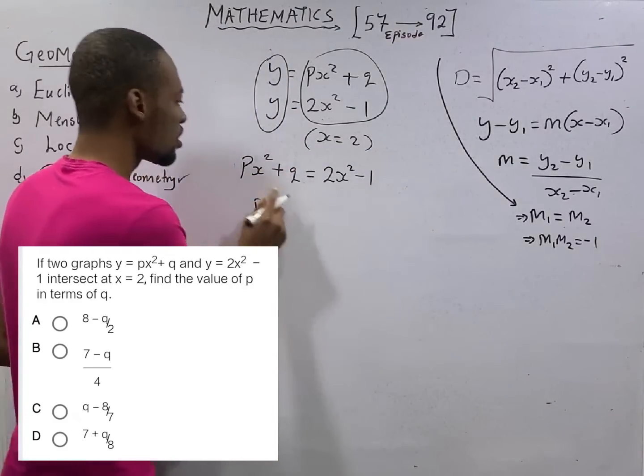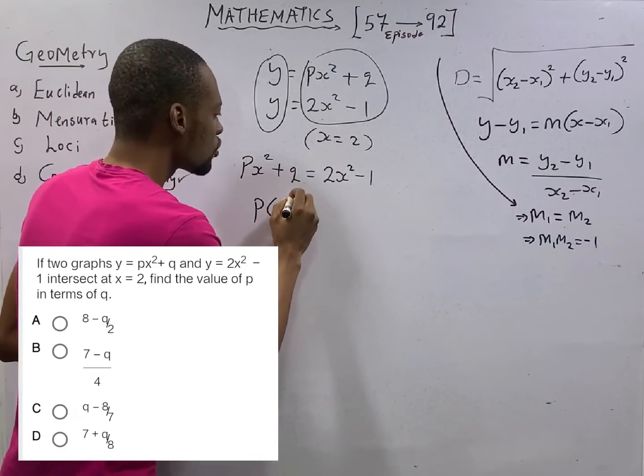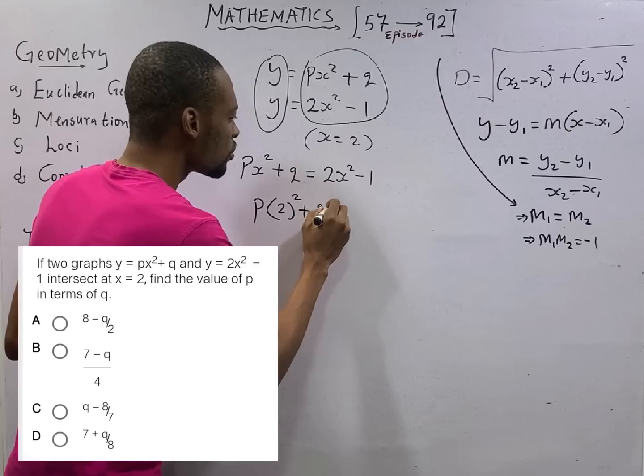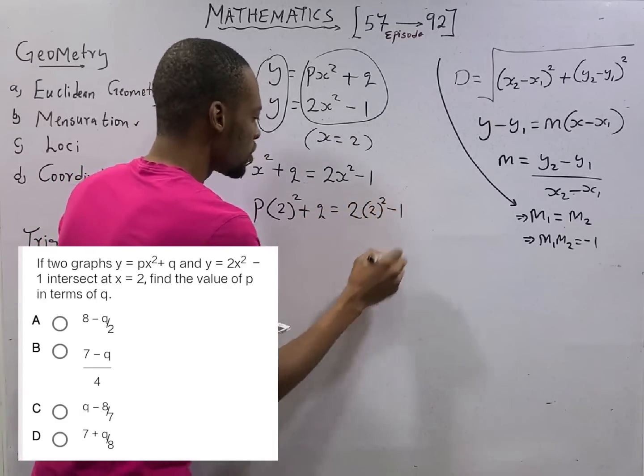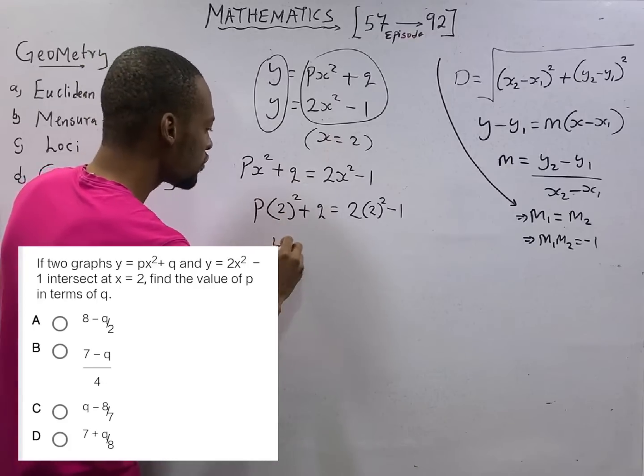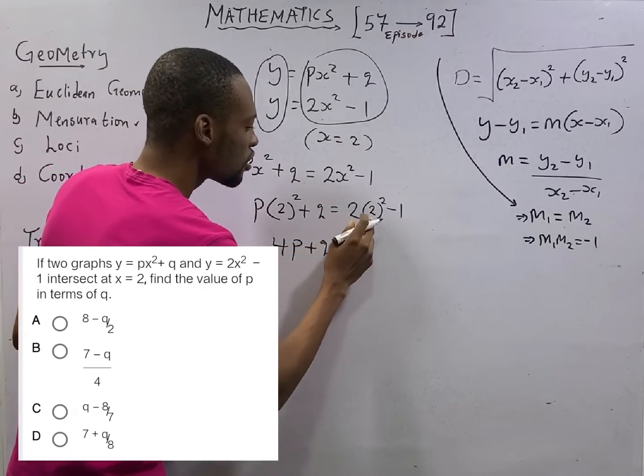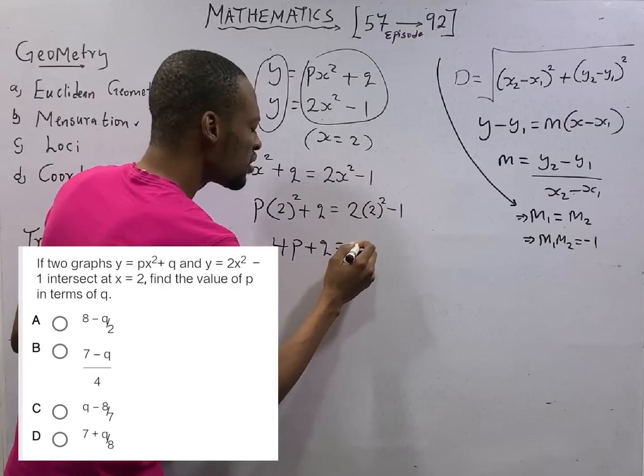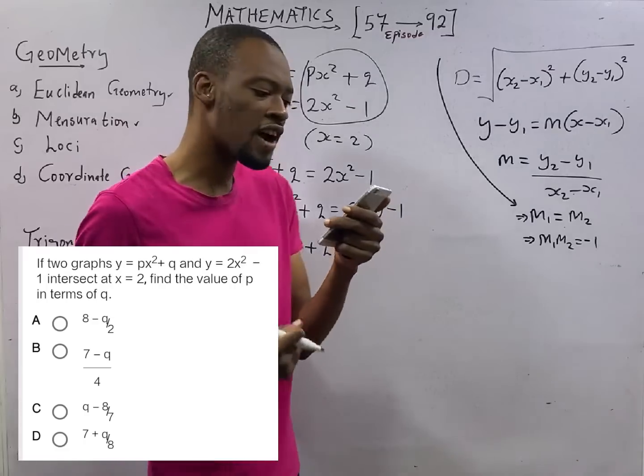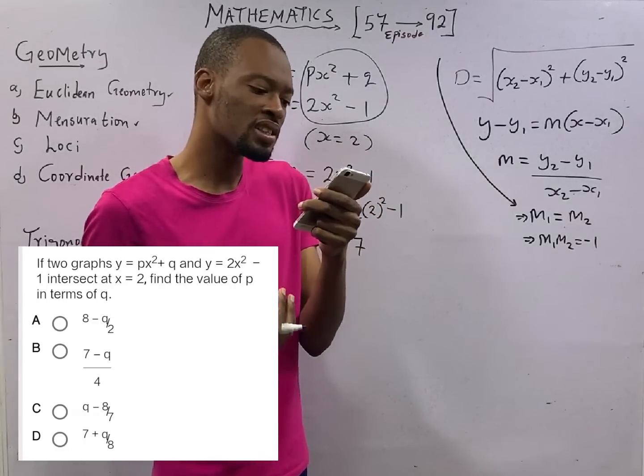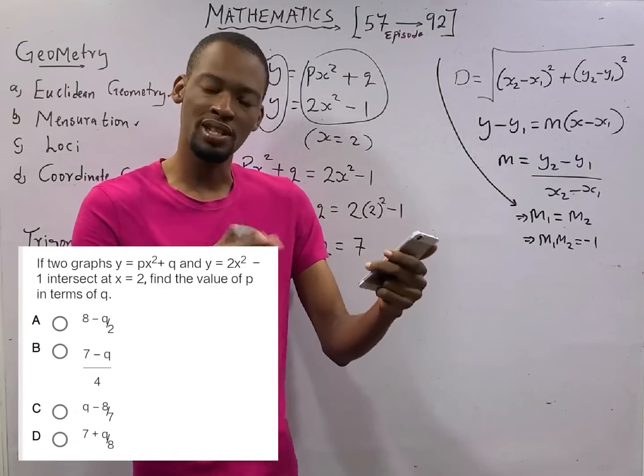This becomes p instead of x, 2. So that is 2 squared plus q equals 2 times 2 squared minus 1. That should give you 4p plus q equals 7. The question is find the value of p in terms of q. This is another way of saying make p subject of formula.